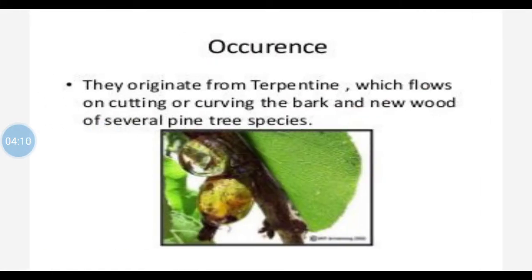Regarding the occurrence and distribution of terpenoids in plants — they originate from turpentine. This turpentine is present in the bark, that is the external covering of the tree, and the wood of most trees, including pine trees. This can be seen in these trees where turpentine is flowing. When the wood is cut or when the bark is getting slightly separated from the tree, this turpentine freely flows and can be observed.